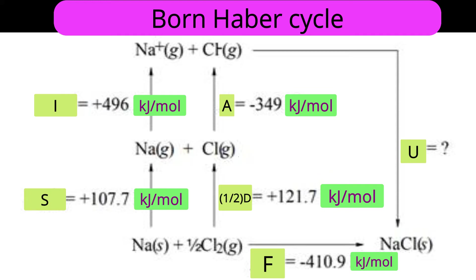Now consider the indirect pathway. Naturally occurring sodium solid is first converted to gas — this process is called sublimation, represented by symbol S. During sublimation, we need to provide energy, so enthalpy change is positive. The enthalpy of sublimation for sodium is +107.7 kJ/mol.